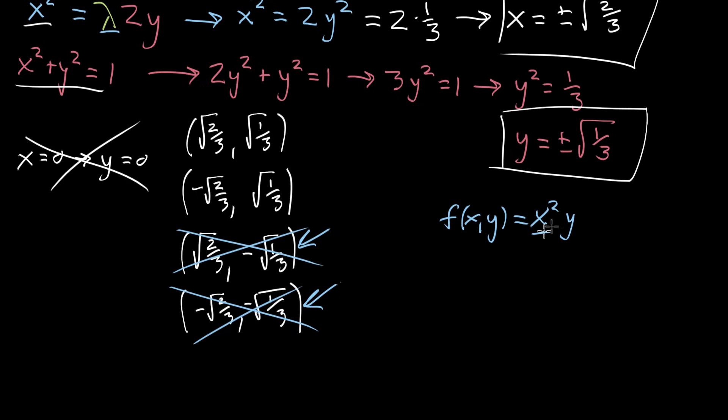because it'll be some positive number, some x squared times a negative. Whereas I know that these guys are going to produce a positive number. And specifically, if we plug in f of, let's say, this top one, square root of 2 3rds, square root of 1 3rd, well, x squared is going to be 2 3rds, and then y is square root of 1 3rd. And in fact, that's going to be the same as what we get plugging in this other value. So either one of these maximizes the function. It's got two different maximizing points, and each one of them has a maximum value of 2 3rds times the square root of 1 3rd. And that's the final answer.